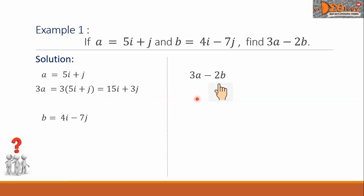Then, we move to 2b. We multiply the constant 2 to vector B. So, we have 2b equals 2 times the quantity 4i minus 7j. And this will be simplified into 8i minus 14j.